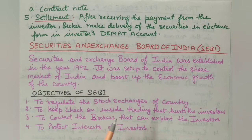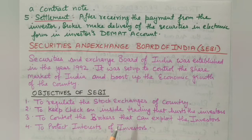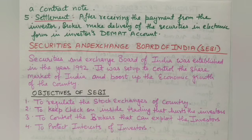The final step is settlement. After receiving the payment from the investor, the broker makes delivery of the securities in electronic form to the investor's DMAT account. You pay the payment corresponding to the value of the securities, and the broker credits those shares in electronic form into your DMAT account. In this way, the complete procedure of investing in the share market through the Securities and Exchange Board of India framework is completed.